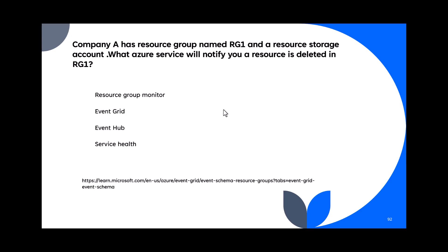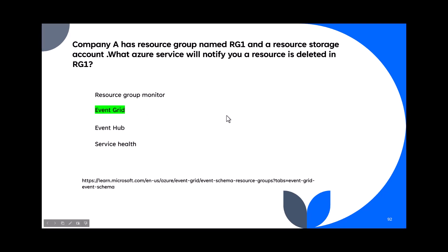Question 92: Company A has a resource group RG1 with a storage account. What Azure service will notify you when a resource is deleted in RG1? Service health is for region failures, not resource-level events. There is nothing called 'resource group monitor.' The answer is Event Grid — it can notify you when a resource is deleted. Event Hub handles billions of streaming events, while Event Grid handles resource event notifications.